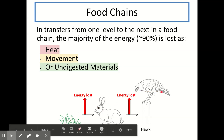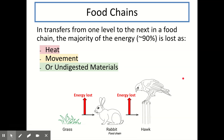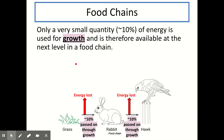In transfers from one level in a food chain to the next, the majority of the energy — around 90% — is lost in one of three ways: heat, movement, or undigested material. As the rabbit moves about, it needs to heat its body, so some energy is used for that; movement also uses energy; and undigested materials such as those in faeces also lose energy from the organism. At each level, around 90% of the energy is lost. You need to remember these three ways — it's a really common exam question.